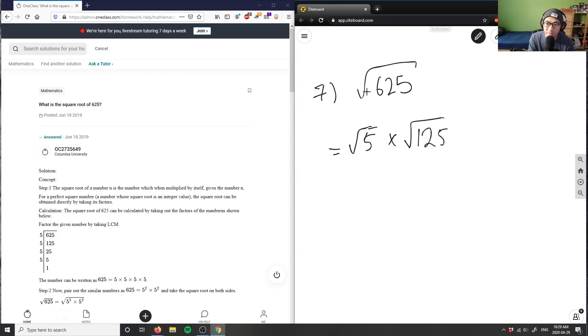Again, I have 125, so I'm going to take out another 5. I have now 125 divided by 5, which is simply 25.